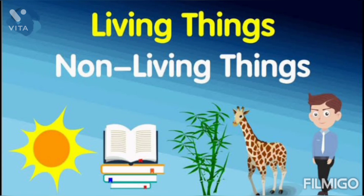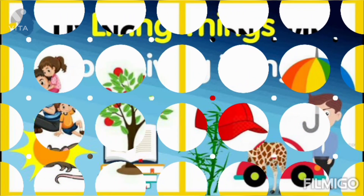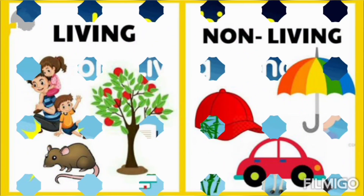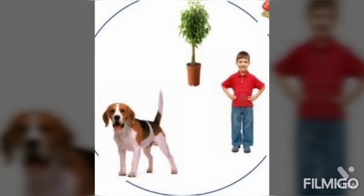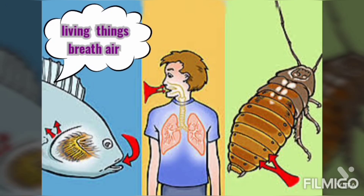Living things and non-living things. Plants, animals and people are living things. Things that do not have life are called non-living things. Things such as umbrella, cab, and car are non-living things. Children, living things are different from non-living things.